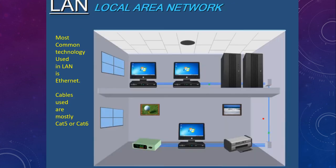The most common network used in homes and companies is the LAN, or Local Area Network. The technology used in LAN is called Ethernet, and we use Cat5 or Cat6 type cables for connectivity in a LAN.